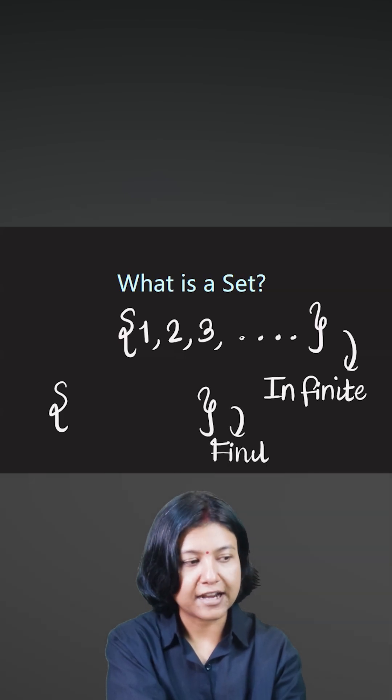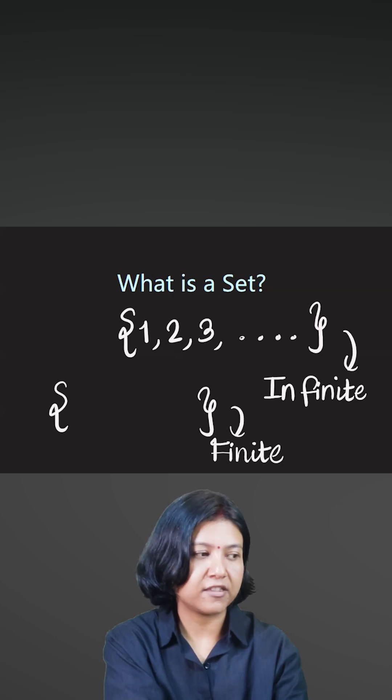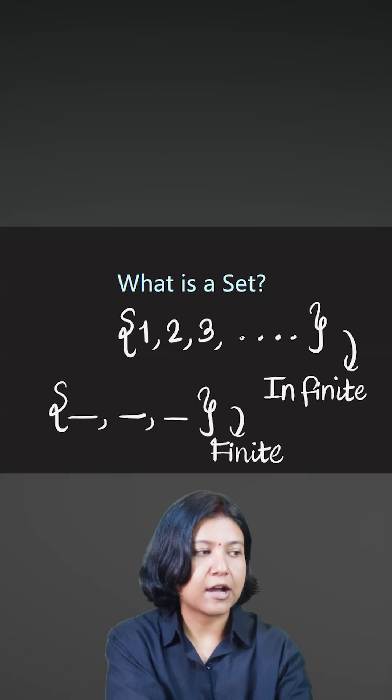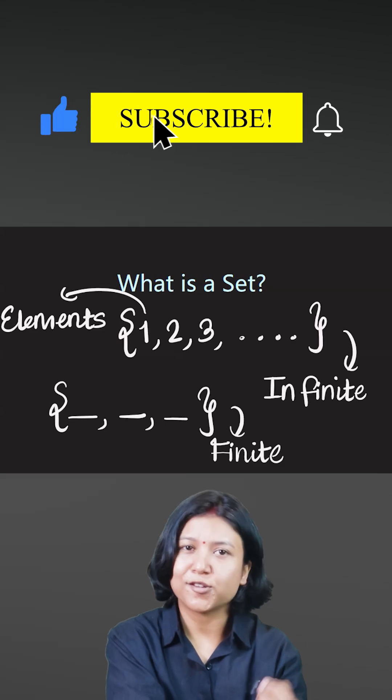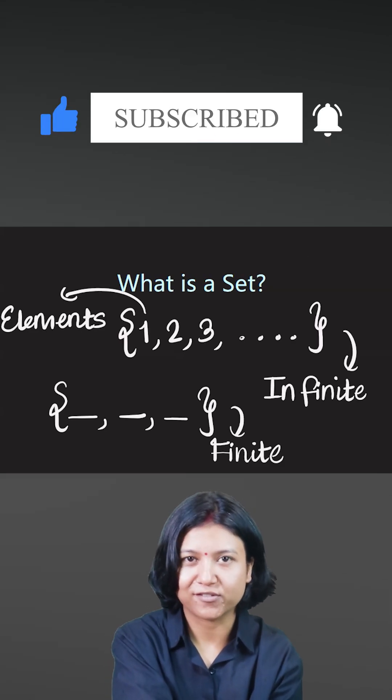And note that each object that I'm saying here - one, two, three, or even the names of different countries - they are now called the elements of the set. Very simple. This is how you should be introduced to the concept of sets.